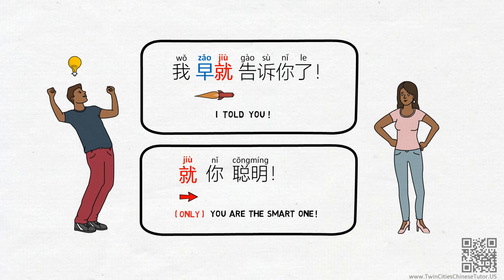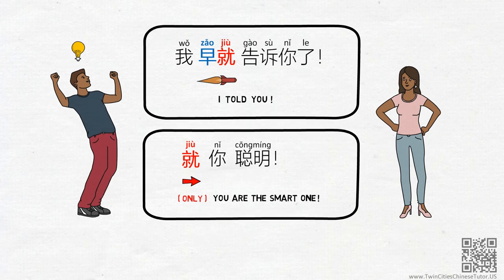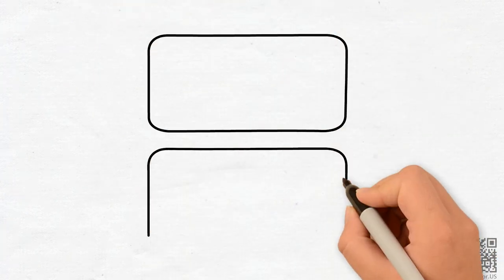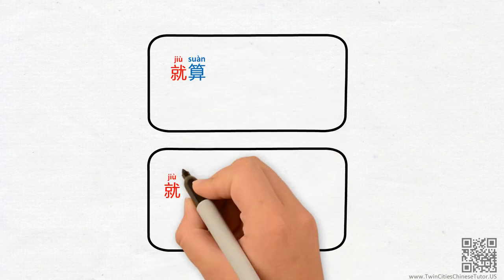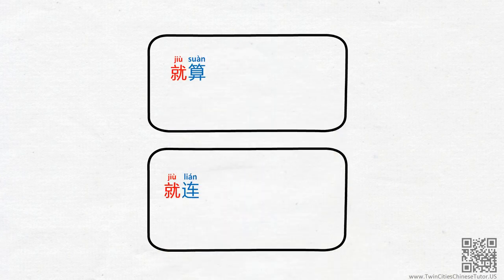Now, the more advanced occasions where jiu is used as a conjunction are when jiu works with other characters to form conjunction phrases. Let's take a look at jiusun and jiulian. As the emphasizing arrow, jiusun and jiulian are both used to add importance to the elements that come after them.